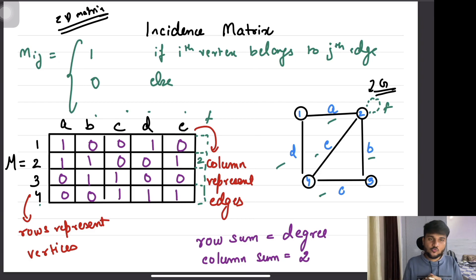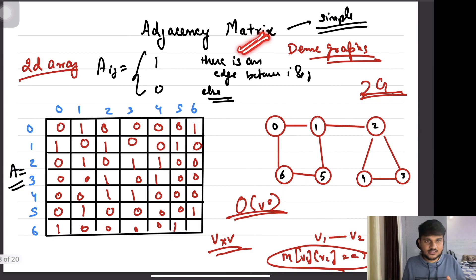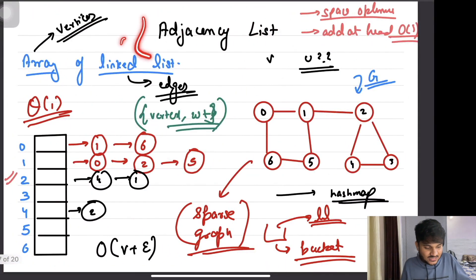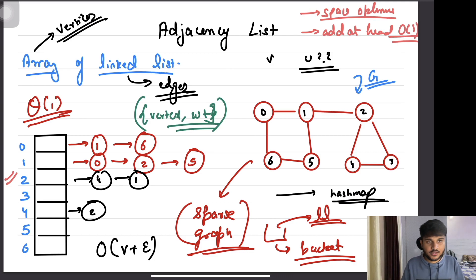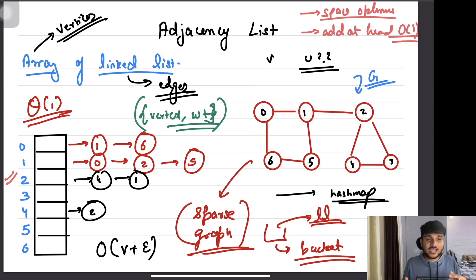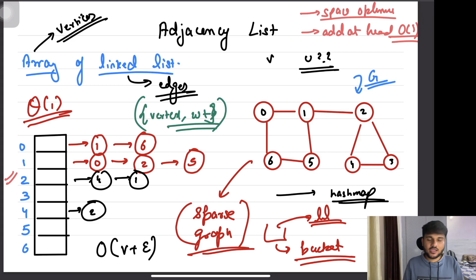In the next part we are going to discuss how you can code these representations. Coding the incidence matrix and adjacency matrix is going to be a cakewalk; we are going to code the adjacency list and display the graph corresponding to the list. I hope you guys enjoyed this session — if yes, don't forget to hit the like button, subscribe to the channel, share it with your friends, and comment any doubts below. See you in the next session, take care!